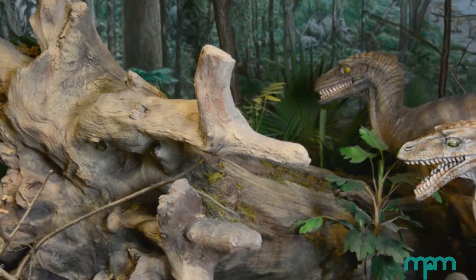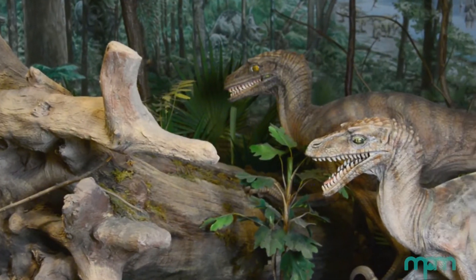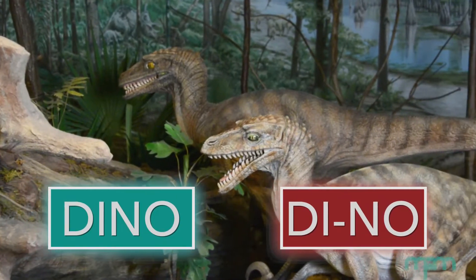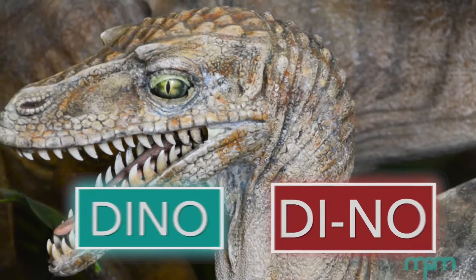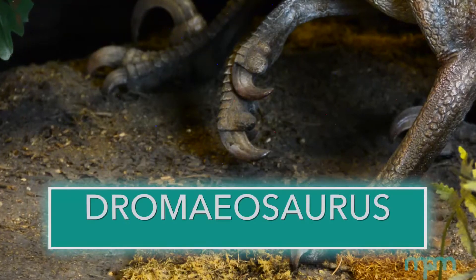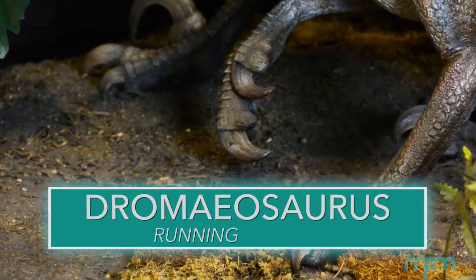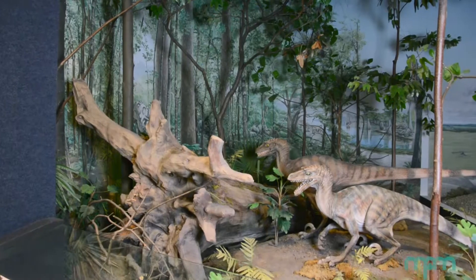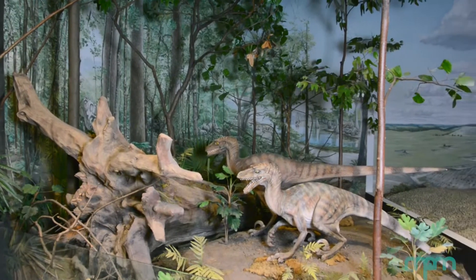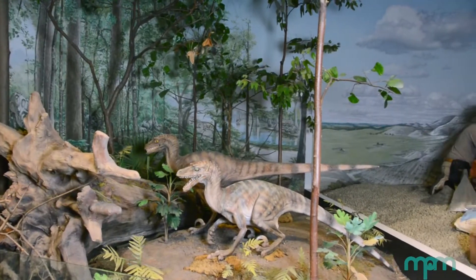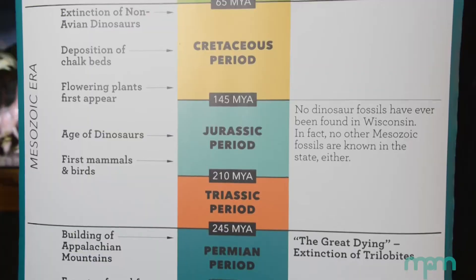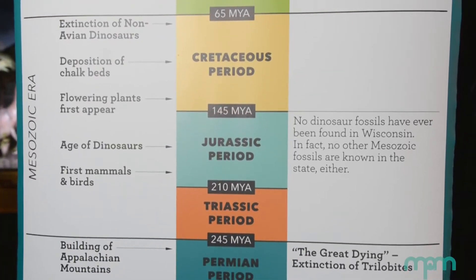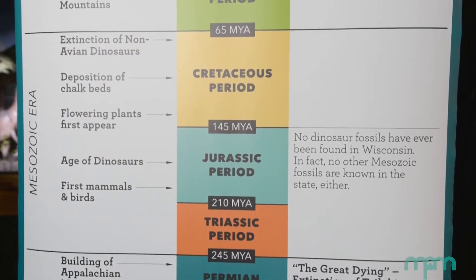The next animal is a dromaeosaurus. Is this a dino or not a dino? It's a dino. The name translates to "running lizard." This is a full-body reproduction created in 2001 and represents the current understanding of what a dromaeosaur looks like. The dromaeosaurus was found in North America during the late Cretaceous.